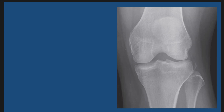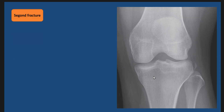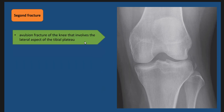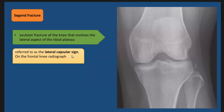This is a case discussion. As we see on the frontal X-ray of the knee joint, we have an avulsion fracture. This avulsion fracture arises from the lateral aspect of the tibial plateau and it is called the Segond fracture. On the frontal X-ray, it is called the lateral capsular sign.